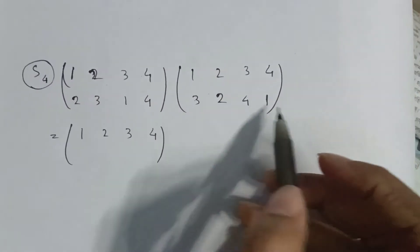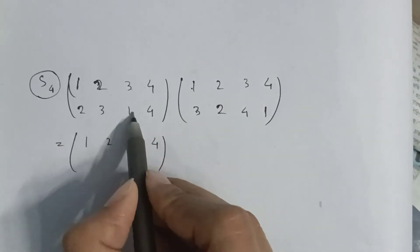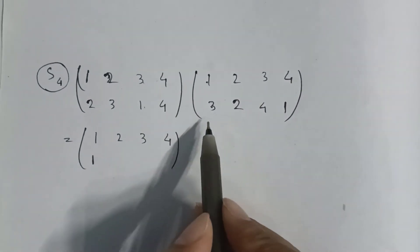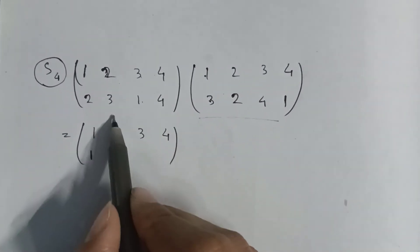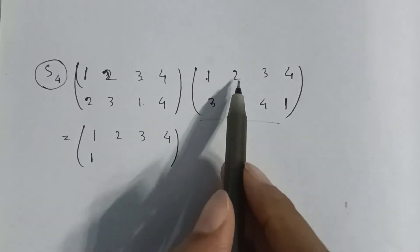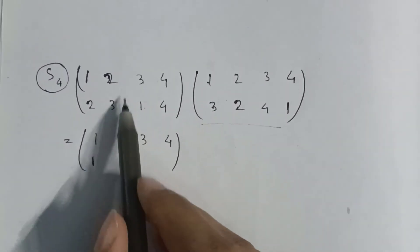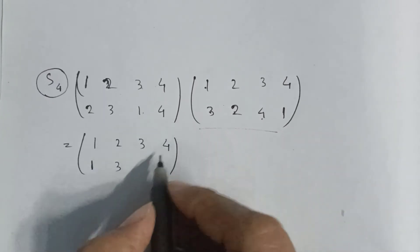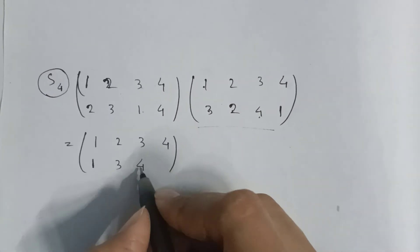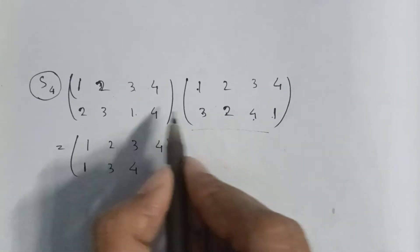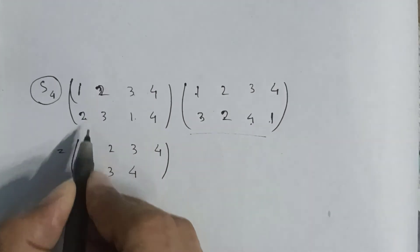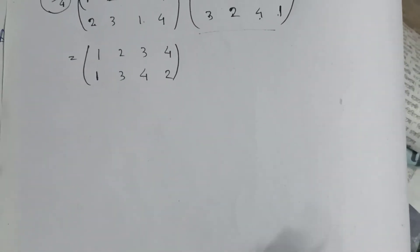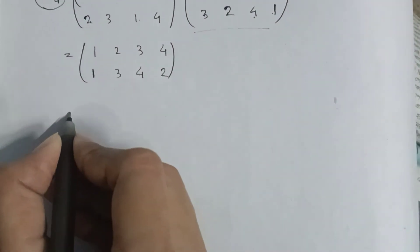To multiply them, consider from right to left. One goes to three, three goes to one, so one goes to one. Two goes to two and two goes to three. Three goes to four, four goes to four, so three goes to four. Four goes to one, one goes to two, so four goes to two.